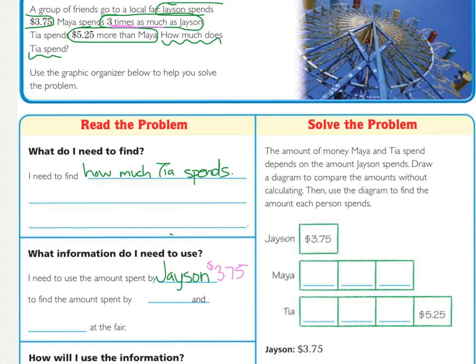To find the amount spent by who. Who, we can find that by looking again. The next sentence was, Maya spends three times as much as Jason. So, the next person we're going to be looking for is, we're going to be looking for Maya's amount. And then, based on Maya's amount, what do we do to that? But, then we are adding it to find Tia's amount.